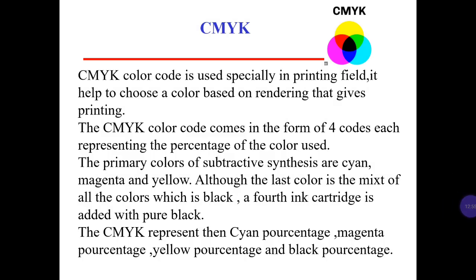CMYK color mode is used specially in printing files. It helps to choose a color based on rendering for printing. The CMYK color code comes in the form of four values, each representing the percentage of the color used. The primary colors of subtractive synthesis are cyan, magenta, and yellow. The last color is the mix of all colors, which is black. A fourth ink cartridge is added with pure black. CMYK represents the cyan, magenta, yellow, and black percentages.